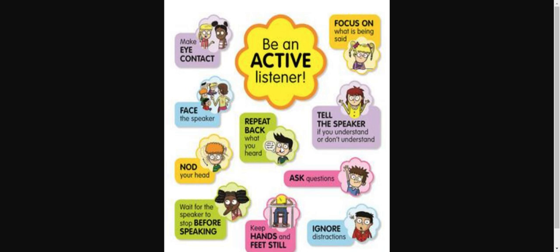Repeat back what you have heard. Suppose you have a doubt about something, you can say: 'You said this — is it correct?' Then obviously the speaker will correct you if something is wrong, or if everything is correct they will say, 'Yes, you are absolutely right.' This is one of the good things you can do as an active listener.